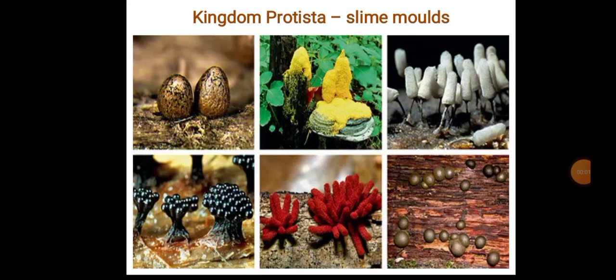Hi everyone. In this slide you are learning about one more important phylum, that is slime molds in the kingdom Protista. They are consumer-decomposer protists, also called as protist fungi, which are characterized by the absence of chlorophyll.